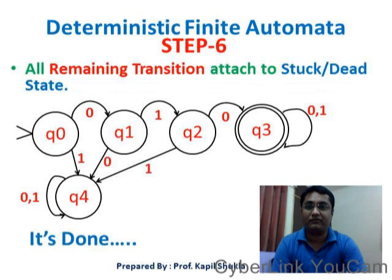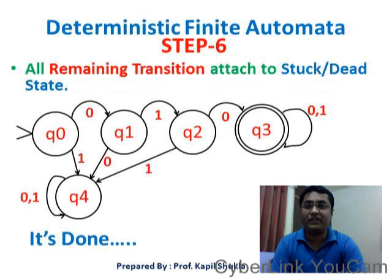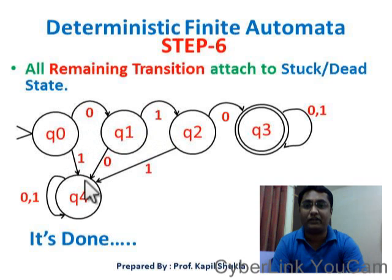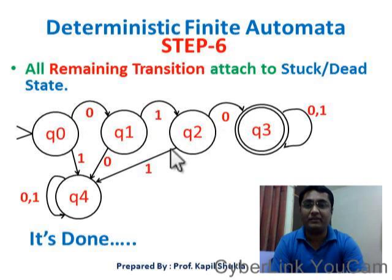Step 6: now attach all the remaining transitions to the stuck or dead state. For Q0, the transition exists for 0, so 1 is remaining and will be attached to Q4. For Q1, 1 is already there, so 0 will be attached to Q4. For Q2, 0 is there, so 1 is remaining and will be attached to Q4.